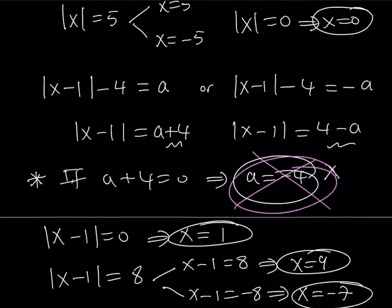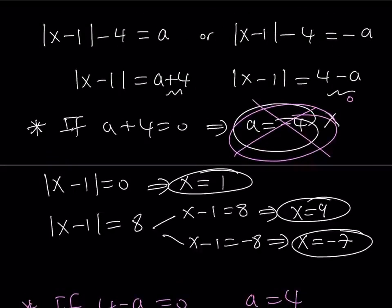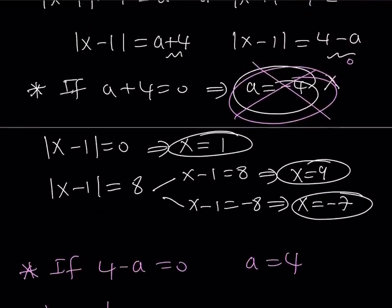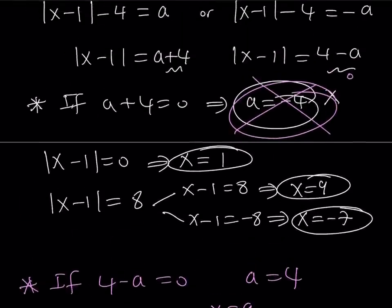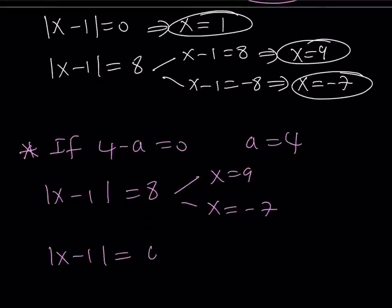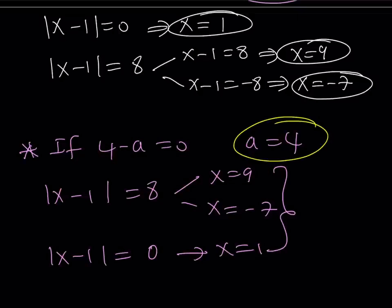Let's look at the second case, where we have this expression equal to zero, which is 4 minus a. If 4 minus a is equal to zero, which means that a is equal to 4, then I get the following. The first one becomes the absolute value of x minus 1 is equal to a plus 4. If a is equal to 4, this is going to equal 8. From here, I get x equals 9 and x equals negative 7 as before. And then if you use the second one for the absolute value of x minus 1 is equal to 4 minus a, which is zero. From here, I get x equals 1. So I get three solutions for this equation and a equals 4 is a good value. So this means that a equals 4.